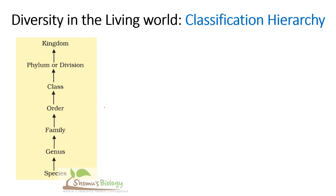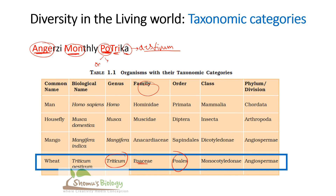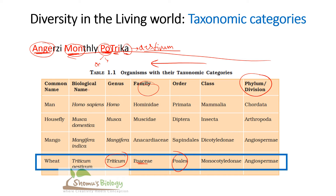Now, we've checked man, housefly, mango and wheat taxonomy categories and found short tricks to remember them. But how do we remember the sequence itself? In all these cases we move from division or phylum towards the biological name. So what is this sequence? It goes from phylum, then class, order, family, genus, then species — moving from the higher division down to the smallest.